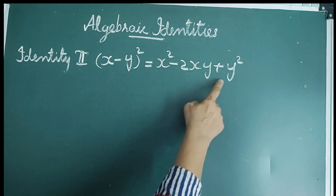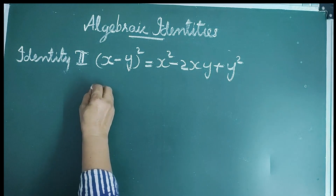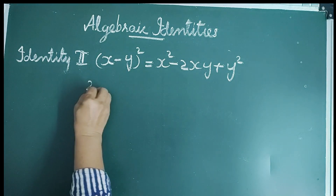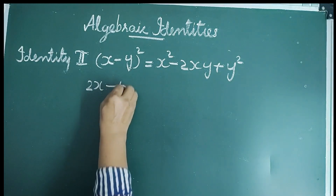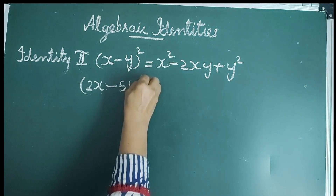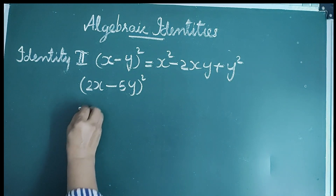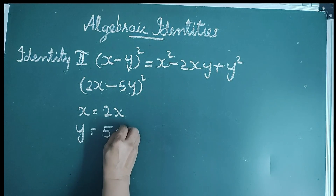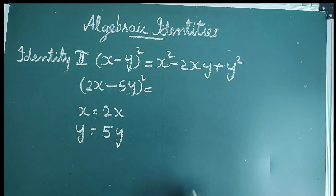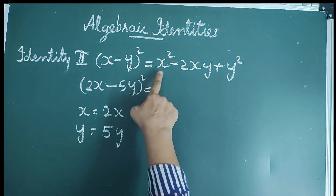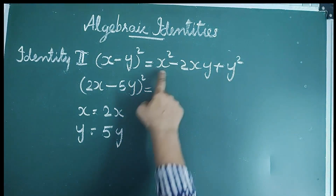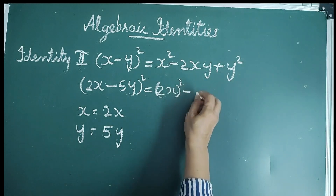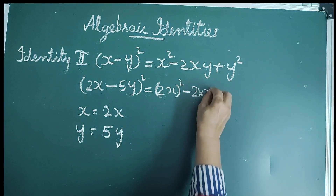Let us consider an example: (2x − 5y)². Here x = 2x and y = 5y. Then applying the identity x² − 2xy + y²: x² is (2x)², minus 2 multiplied by 2x multiplied by 5y.